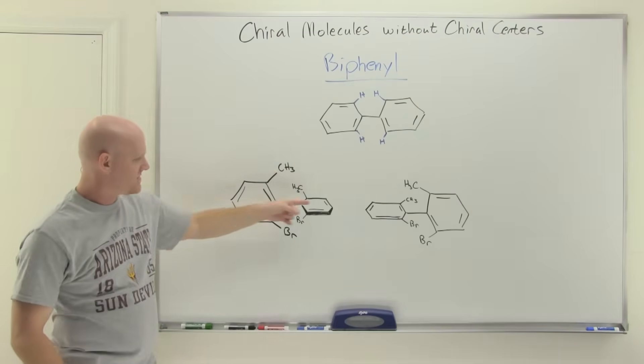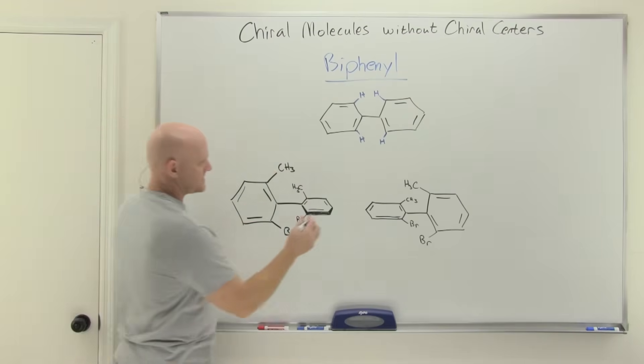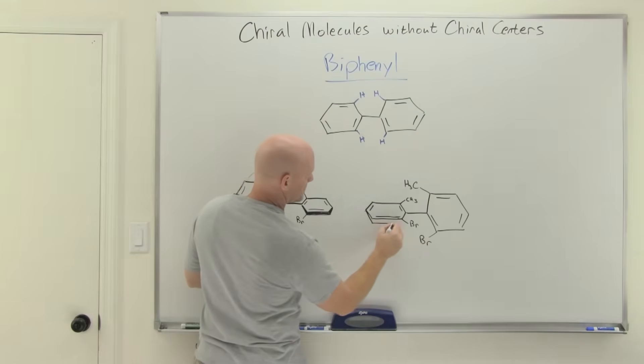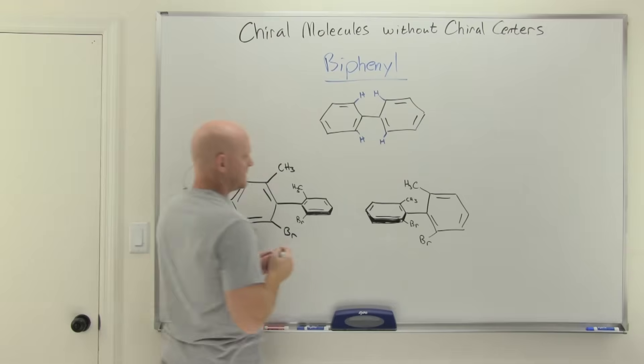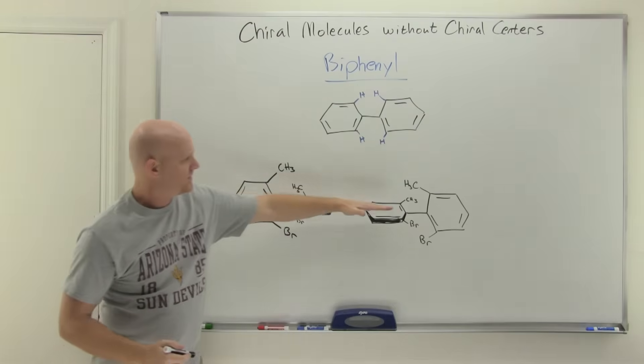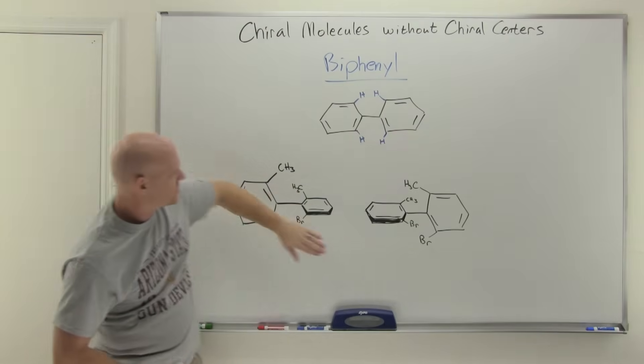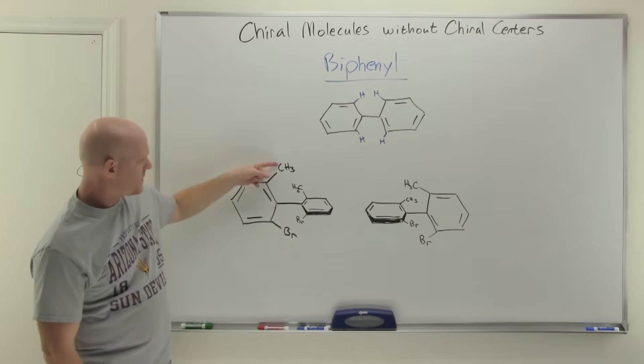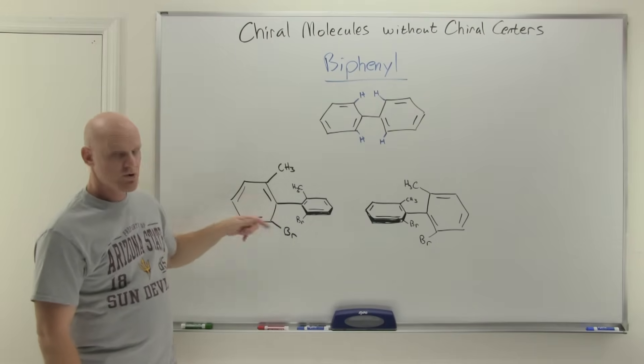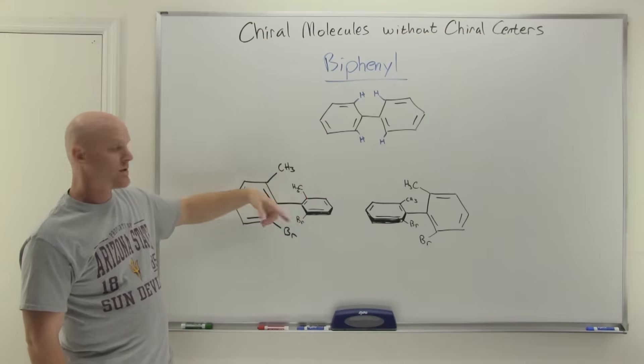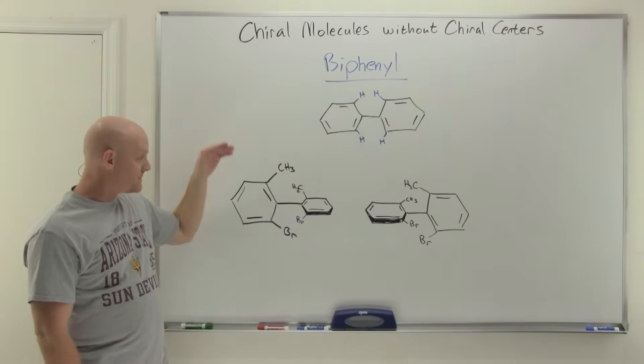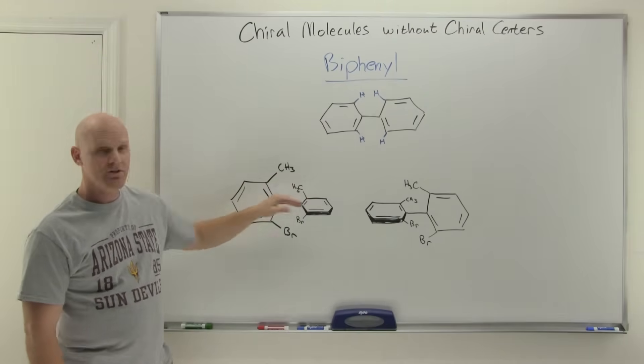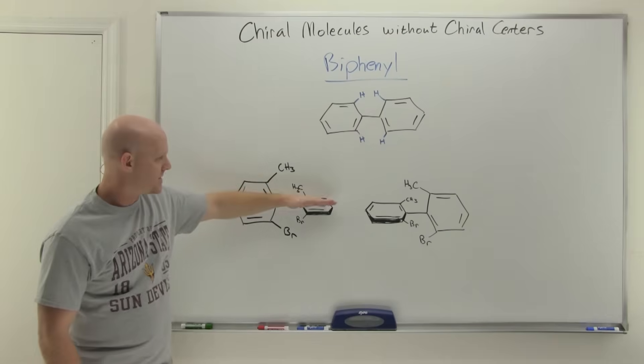And I've kind of tried to represent that here. So this one's in the horizontal plane on both sides. And then these are in the vertical plane. And because of the ortho positions all having large groups, they just kind of want to sit there. They'll rotate a little bit, but they can't rotate 360 for sure. And they'd prefer to be orthogonal to each other, these rings, 90 degrees apart.